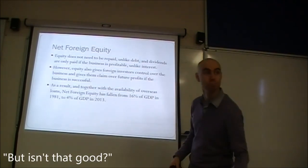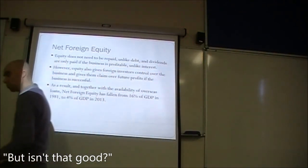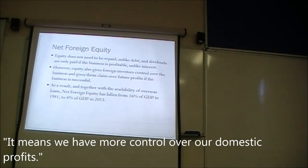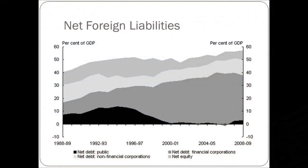Is this shift toward debt a good thing? It does mean more control over domestic businesses and future profits. But it's only good as long as Australian businesses perform well — if they fail, loans must be repaid, and creditors access collateral, whereas with equity the foreign investor bears the loss. Australia is currently taking on a lot of risk. Spain, Greece, Iceland, and Ireland all took on significant debt — and it did not work out for them.